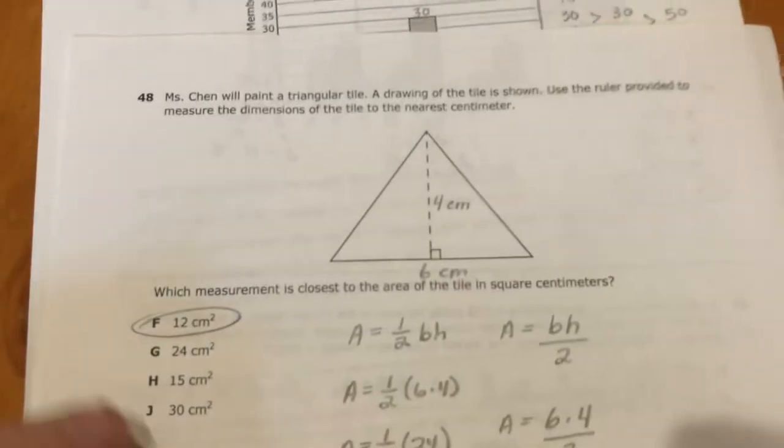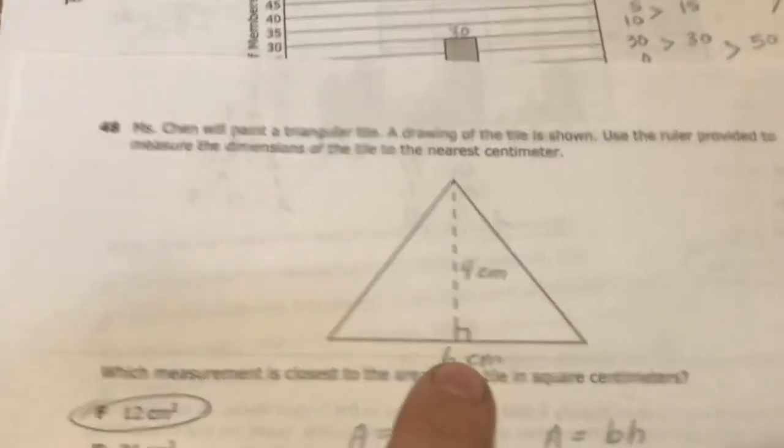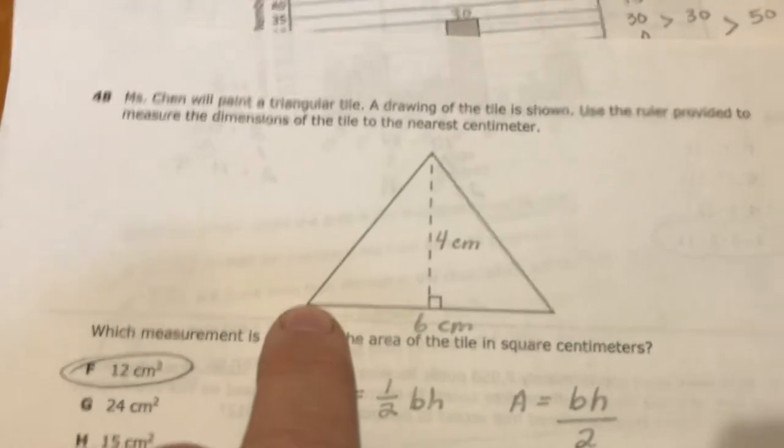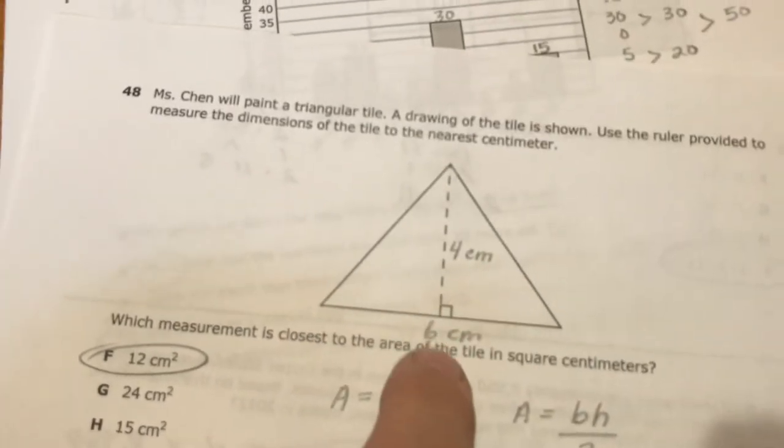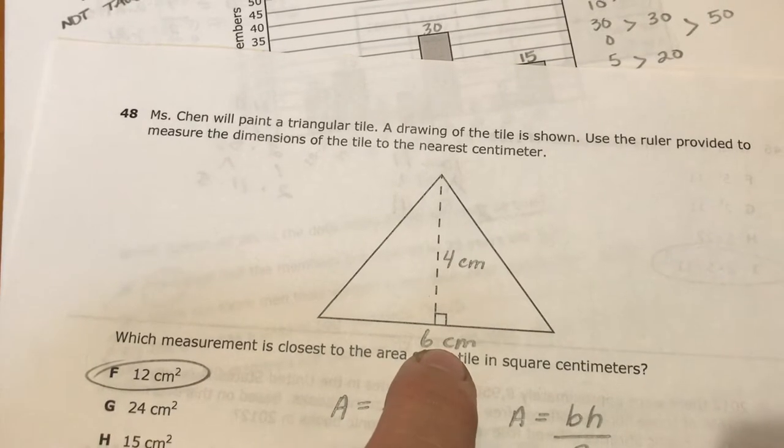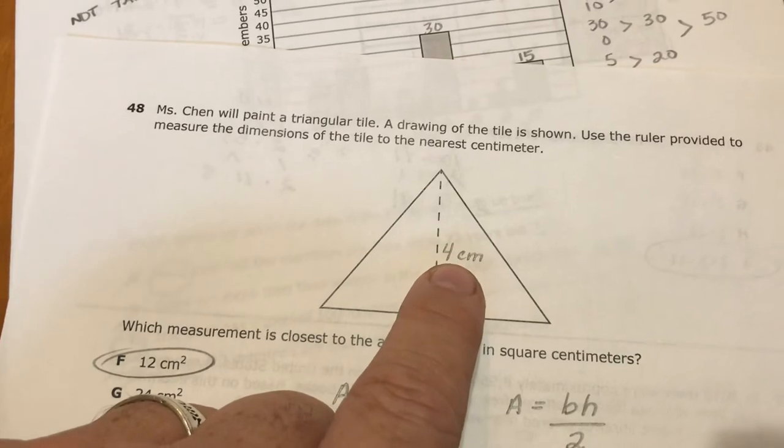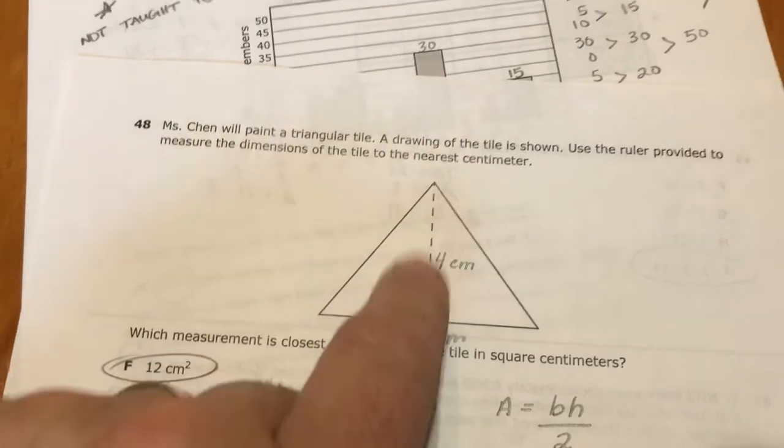All right, 48, area of a triangle. You have to use a ruler to measure. So if you measured this, you should have gotten, it's not exactly 6, but it says round to the nearest centimeter, so it's closer to 6 than 5, so we call this 6. This one right here is closer to 4 than 3, so we call the height right here 4 centimeters.